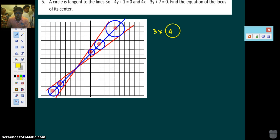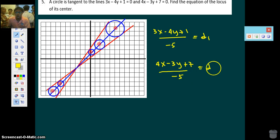So setting up the angle bisector. You have 3x minus 4y plus 1, all over square root of negative 5. This will be our D1. The second is 4x minus 3y plus 7 over negative 5. This is D2. Now, D1 and D2 will be the distances between the lines and the point. But the point is below the other line. The other point is above the other line. Therefore, we should equate not D1 and D2 but D1 equated to the negative of the other.